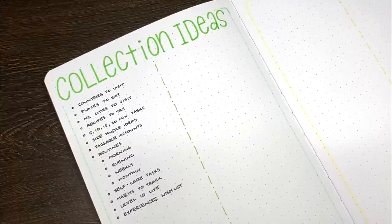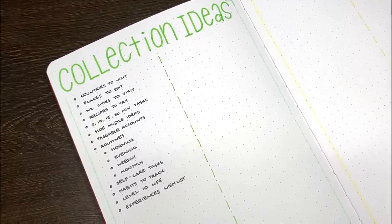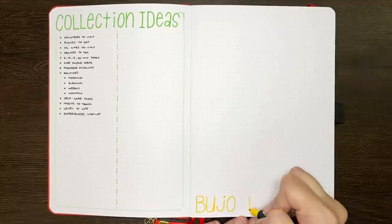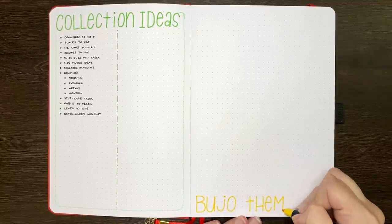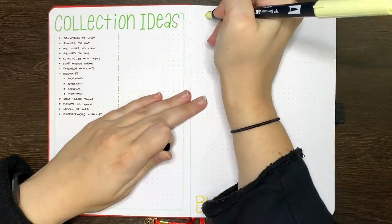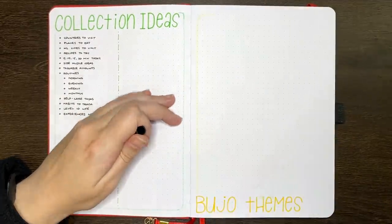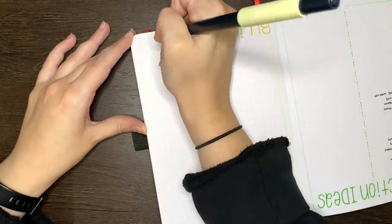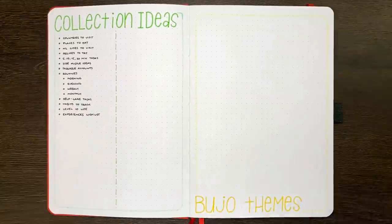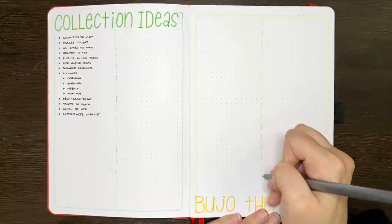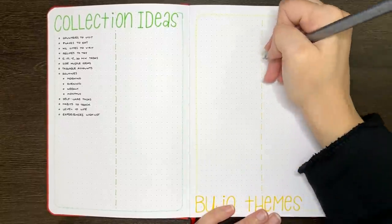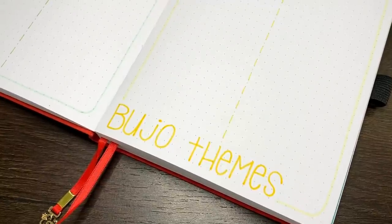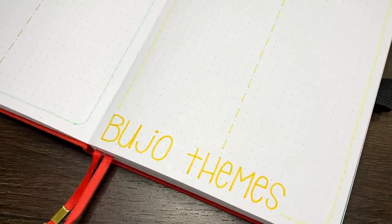On the other side of the spread, I'm setting up another one of my most valuable collections, which is a space to record any bullet journal theme ideas. I find it really handy to have a space for this, so that anytime I'm setting up a new month, I can come to this list and see all of the themes that I wanted to do previously. It's really good to have a space like this handy, so that anytime you're scrolling through Instagram, Pinterest, all that jazz, if you come across a theme that looks really cool, you can note it down here, and then all of those ideas are in the one space.